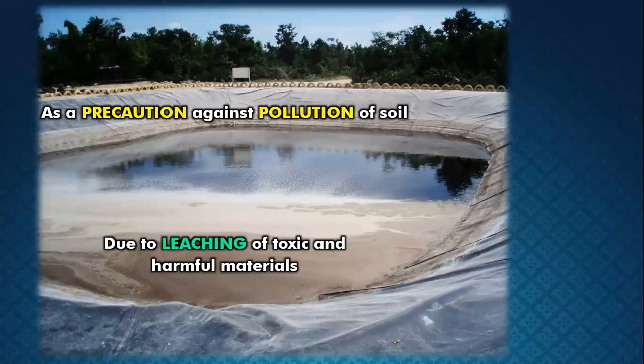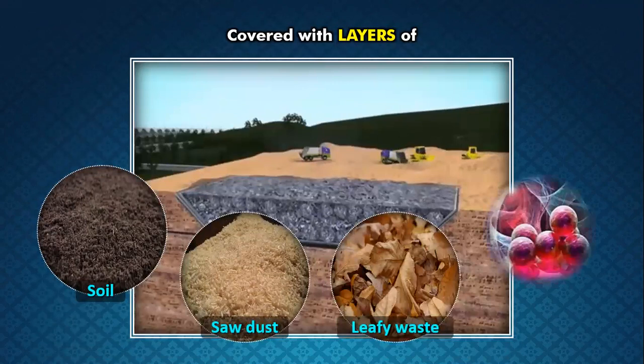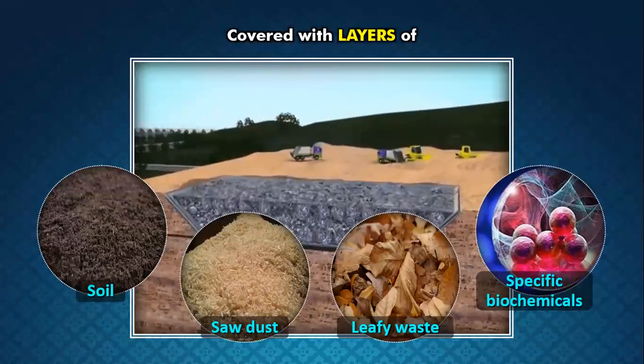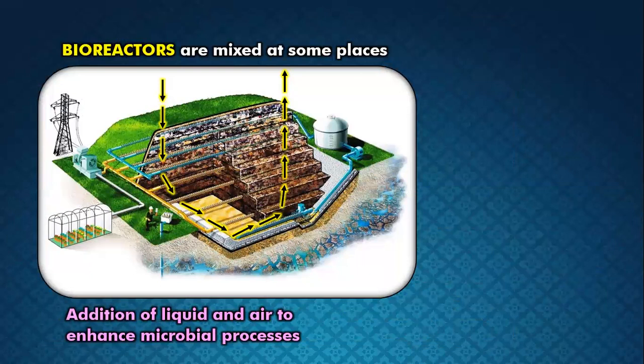The compressed waste is dumped into the pit and covered with layers of soil, layers of sawdust, then leafy waste, and finally specific biochemicals. Biochemicals can be enzymes or different types of microbes which speed up the overall degradation or decomposition reaction. Bioreactors are also placed at certain points where you can control the speed of decomposition and enhance the microbial process by addition of either water or air.